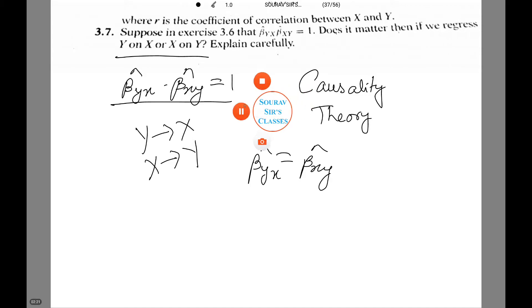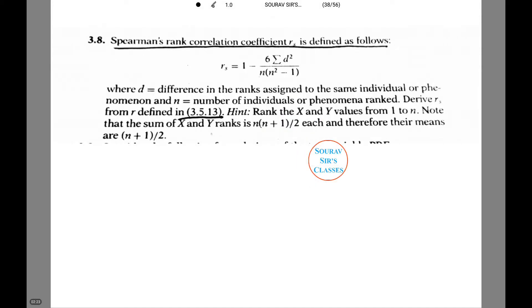Let us see another question. Now we have a very important question. Spearman's rank correlation coefficient rs is defined as the following. Over here d is the difference in ranks assigned to the same individual or phenomenon and n equals the number of individuals. We are also given a hint that you can read for your ease. Let's see what to do.